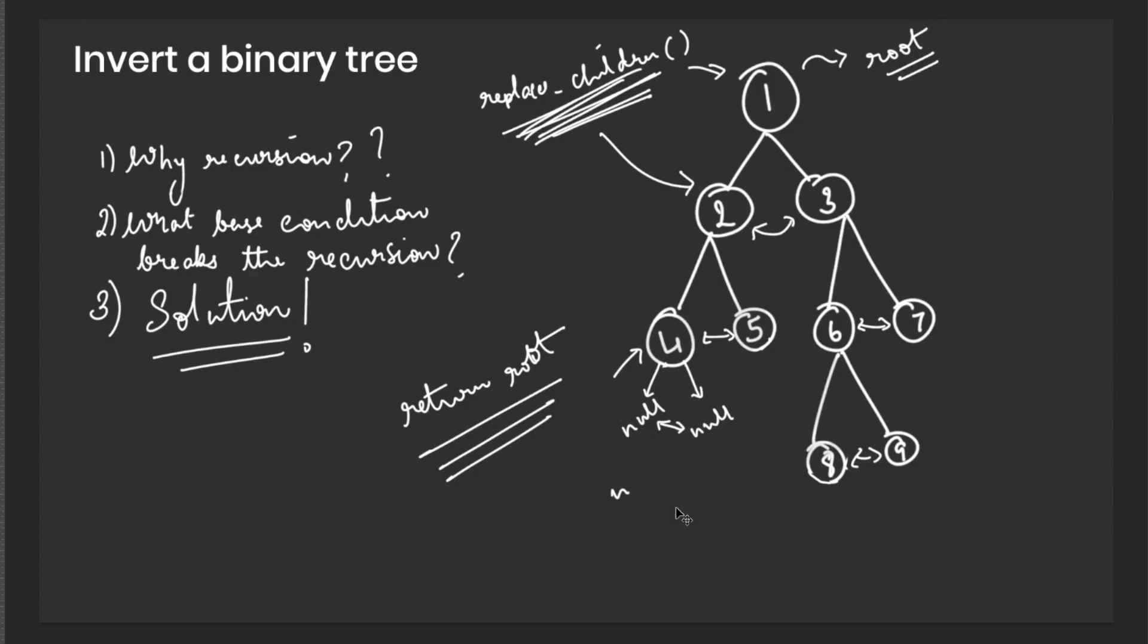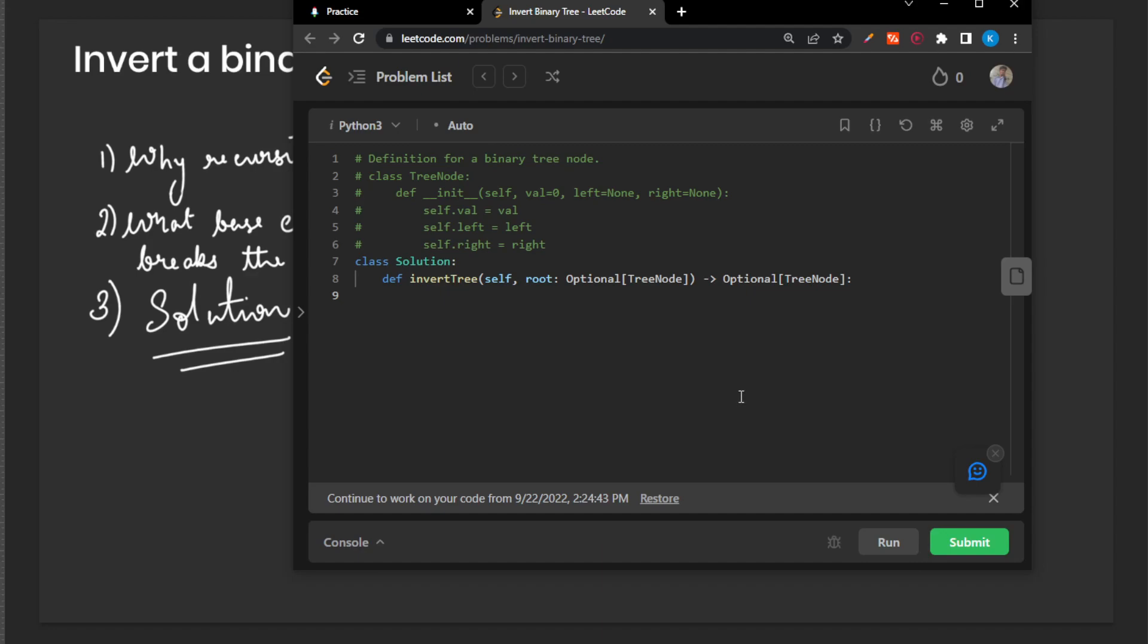So we don't want that to happen in our replace children function. So what we need to do first of all is that we need to take care of the base condition when the recursion ends.